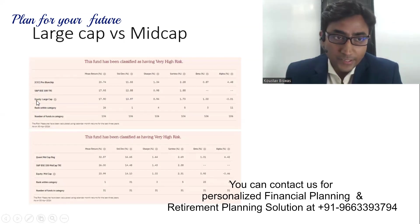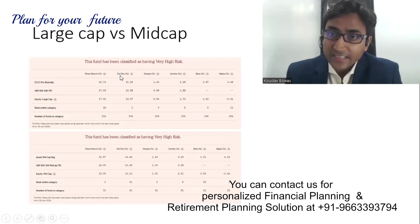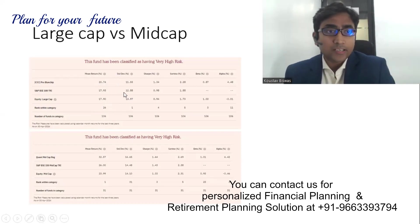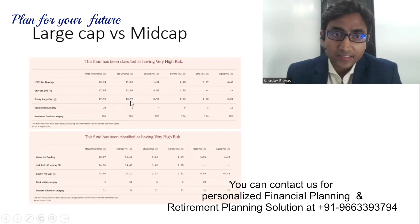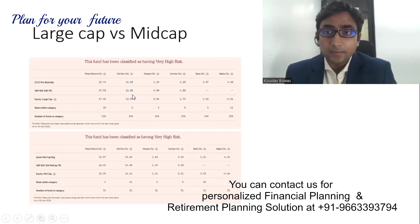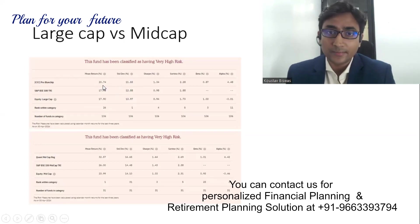Equity large cap category return is 17.90, so this fund has a better return than its category. Now if I see the standard deviation of this particular fund, it is 11.55, where the S&P BSE 100 TRI is 12.88 and the large cap category is 13.97. So the fund has lower standard deviation than its benchmark — lower volatility and higher performance.